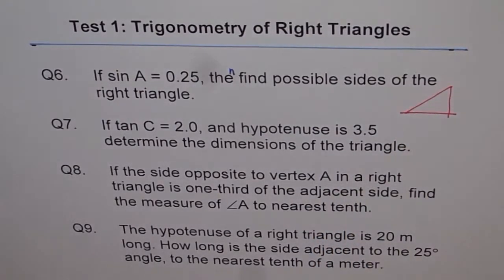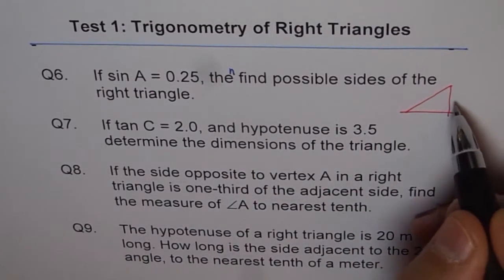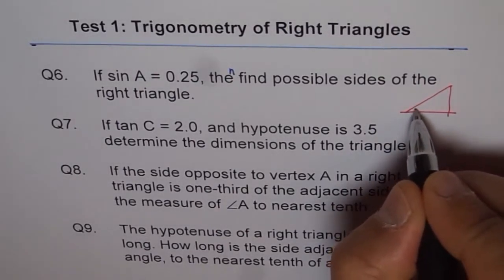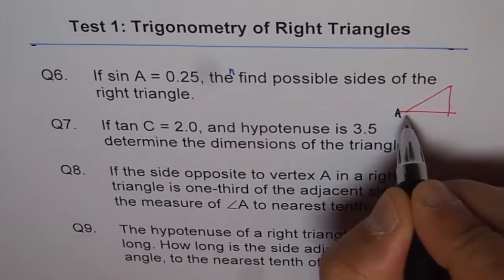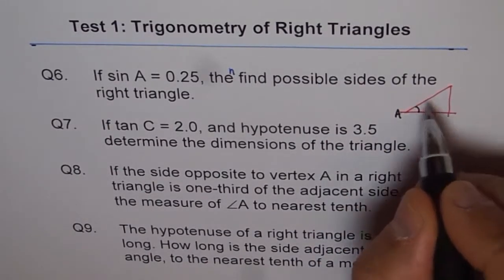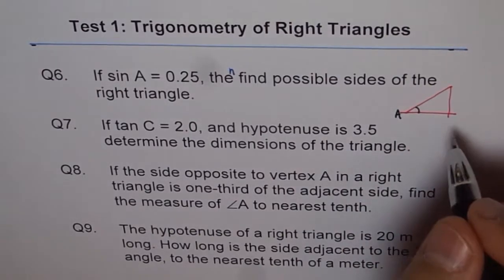When we say that sine A is 0.25, it means that the ratio of opposite side to the hypotenuse is 0.25. So let's say this angle is A for us. The opposite side is 0.25 and this side is 1.